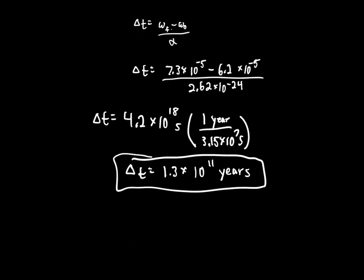This is a little different from the book's answer because they don't round at the same place. But it's close enough. 1.3 times 10 to the 11 years — it takes a very long time. Alright, let's do number 30.